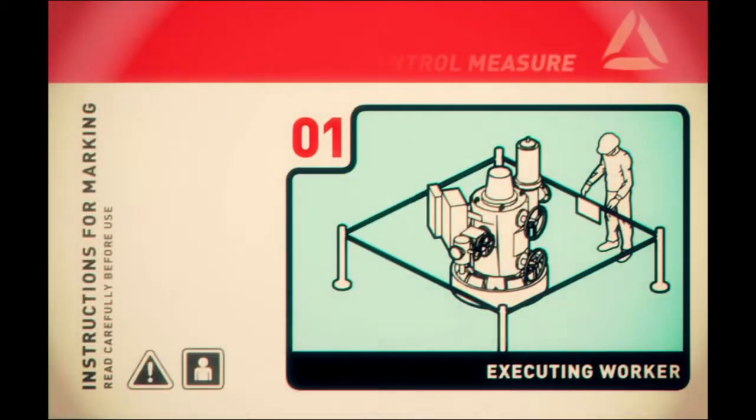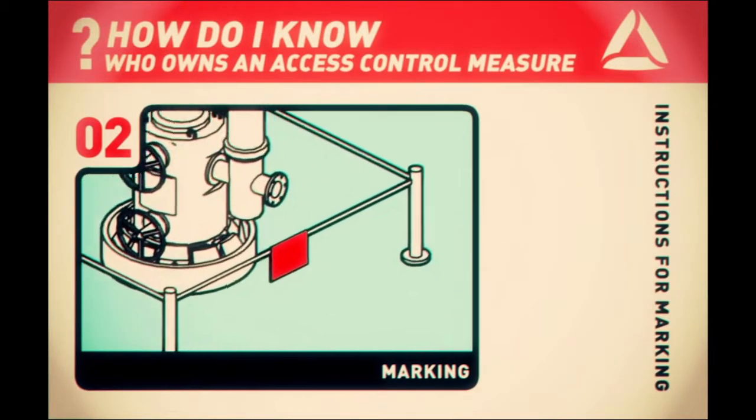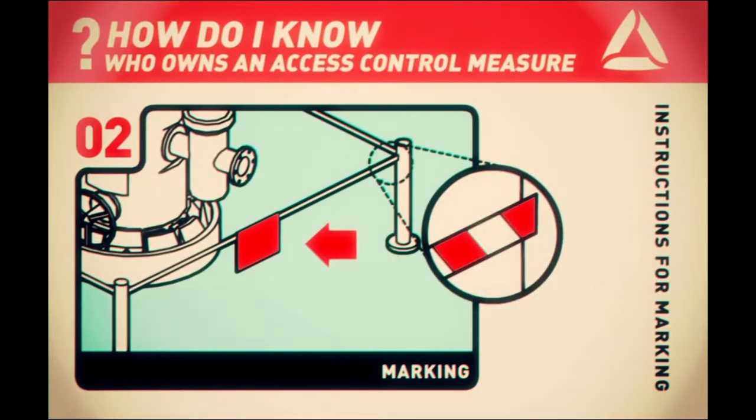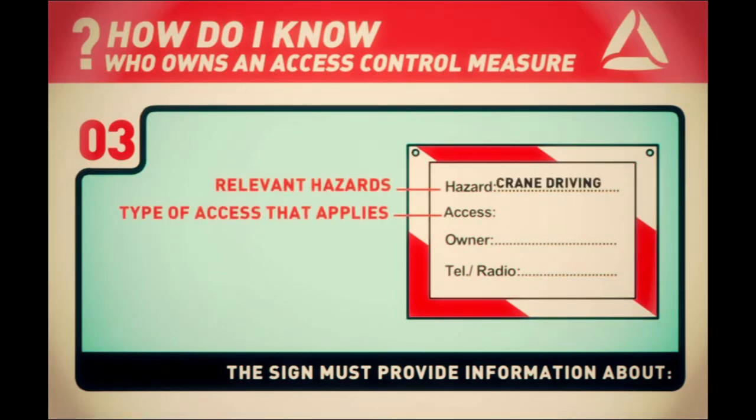So that it is clear who owns an access control measure, the restricted area must be marked. The sign must be clear and provide information about relevant hazards, the type of access that applies, no access or authorized personnel only, and the owner of the restricted area.